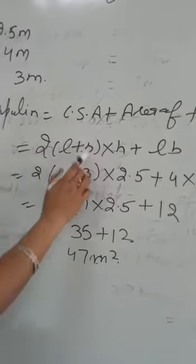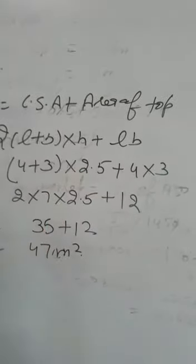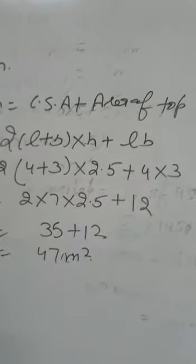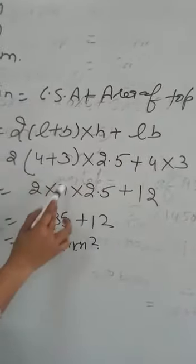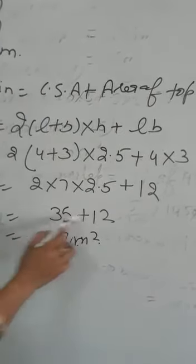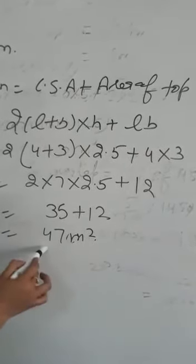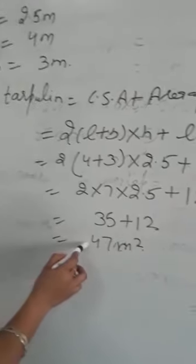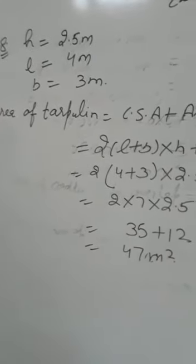So curved surface area is 2(length plus breadth) into height. 2 into length is 4, breadth is 3 and height is 2.5. Plus area of top as top is also rectangular shape. So that is L×B 4 into 3. Now solve it 4 plus 3 is 7. 7 into 2 is 14. Multiply 2.5 that is 35. Plus 4 into 3 is 12. By adding these 2 we will get 47 meter square. This is the required tarpaulin to make box like structure to cover the car.